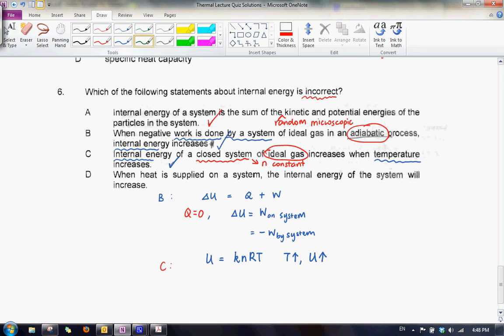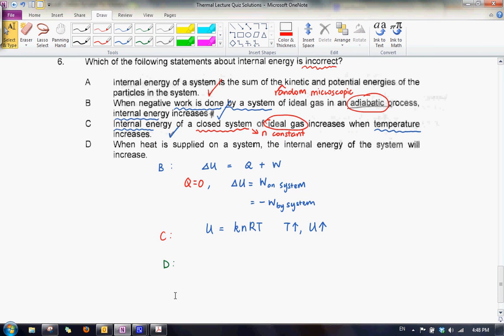So lastly, we have option D. When heat is supplied on a system, the internal energy of the system will increase. So again, we are trying to relate heat and internal energy of the system.